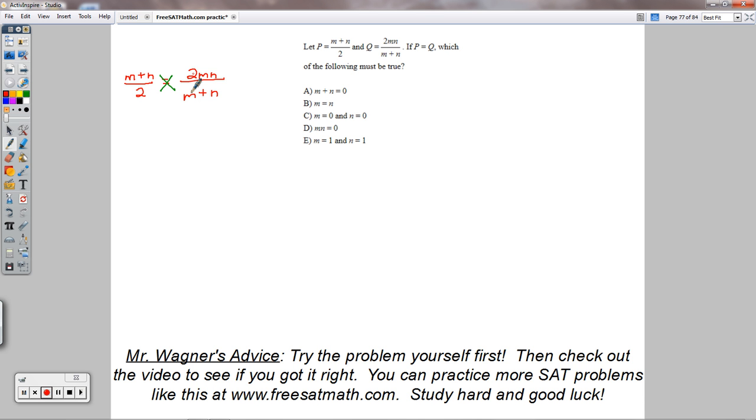We would have M plus N times itself, M plus N squared, for this times this. And then we'd have 2 times 2MN would be 4MN.